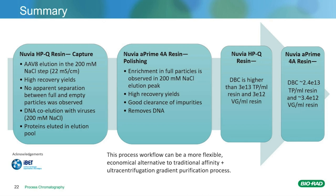Moving on to the final summary. The Nuvia HPQ as a capture in the 200 mM step led to a high recovery of the total particles. While there was no apparent separation between empty and full, that wasn't the purpose of this step. There was DNA and some proteins co-eluted with the viruses in the 200 mM fraction. With the Nuvia A'4A, you're able to see enrichment of the full particles in the 200 mM elution peak, giving good recovery and removal of impurities and DNA. The DBC is higher than 3×10¹³ particles per mL for the Nuvia HPQ, and the Nuvia A'4A has a DBC of approximately 2.4×10¹³ total particles per mL. We feel that this process workflow could be a more flexible, economical alternative to traditional affinity and ultracentrifugation gradient purification processes.